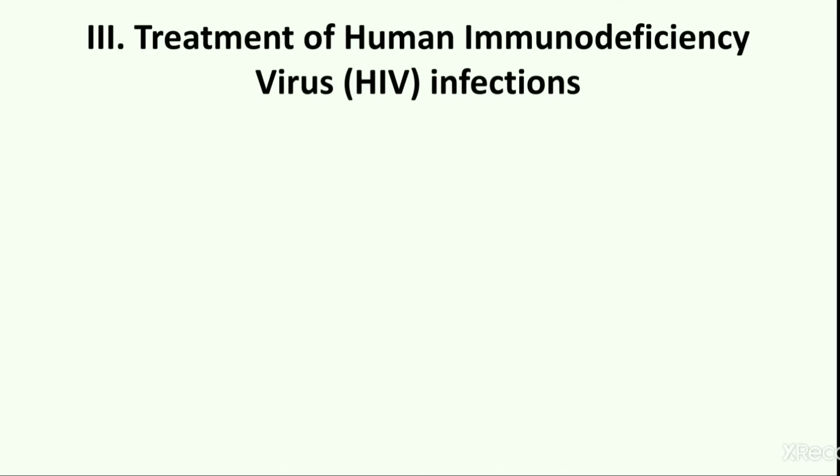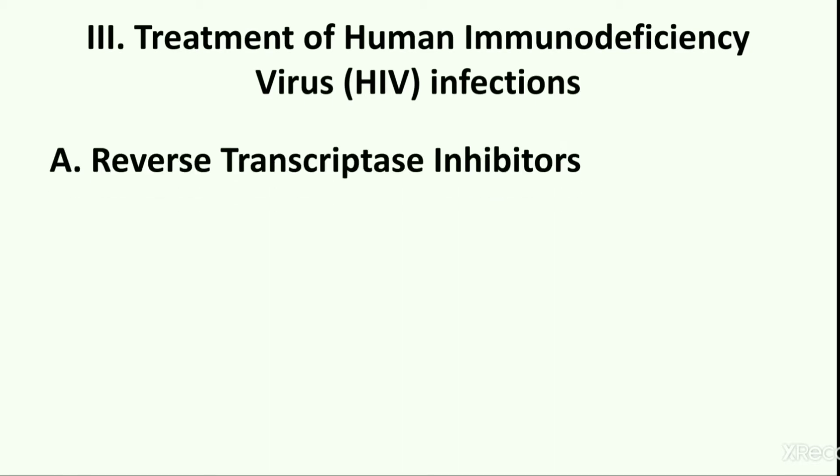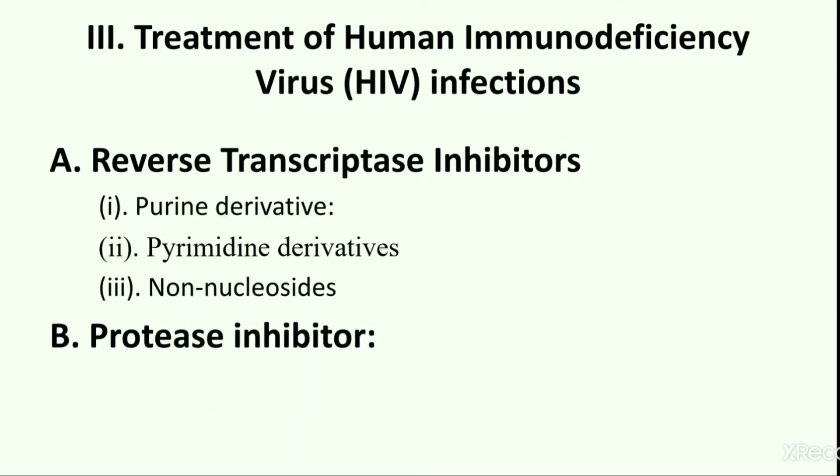The third category of antiviral agents, which includes anti-HIV agents, is divided into three subcategories: a) reverse transcriptase inhibitors, b) protease inhibitors, and c) integrase inhibitors, according to the mode of action of the agents. The first subcategory is further subdivided into purine analogues, pyrimidine derivatives and non-nucleosides.